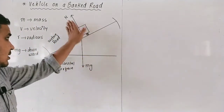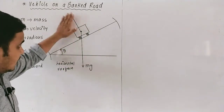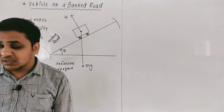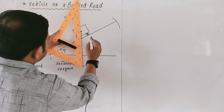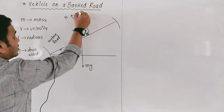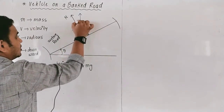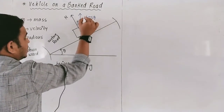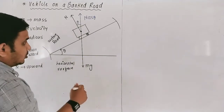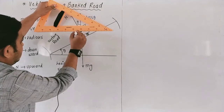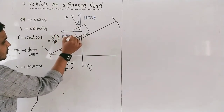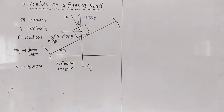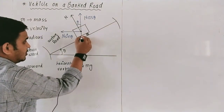The normal reaction resolves itself into two components. The vertical component is N cos theta, which balances the weight mg acting downward. The horizontal component is N sin theta, which provides the necessary centripetal force. At this stage, we are ignoring frictional force because friction is not reliable — let us assume for now that frictional force does not exist, and the road is banked at angle theta.